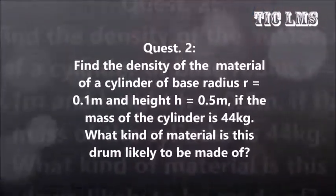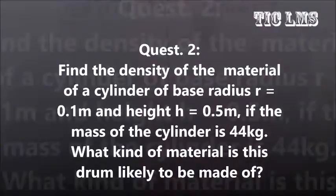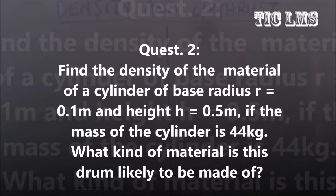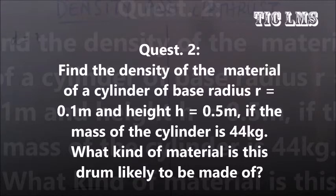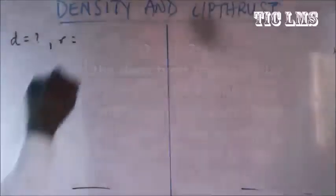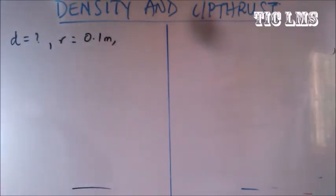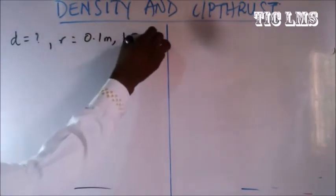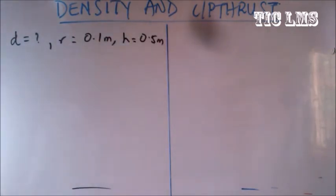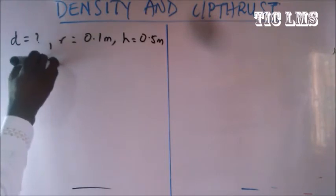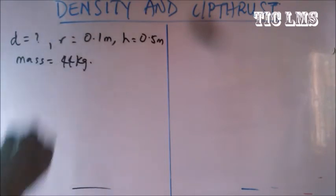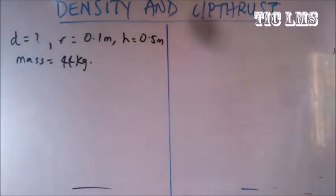The next question says: find the density of the material of a cylinder of base radius 0.1 meter and height 0.5 meter if the mass of the cylinder is 44 kilograms. What kind of material is this cylinder likely to be made of? We are asked to find the density. The parameters are radius 0.1 m, height 0.5 m, and mass 44 kg.